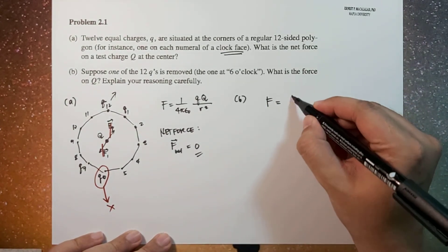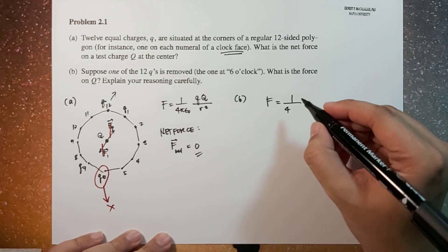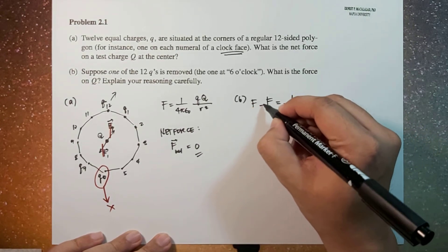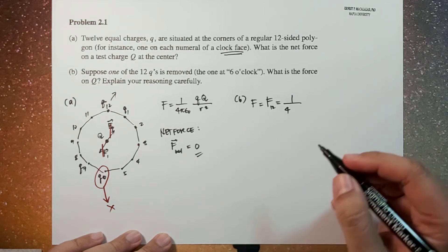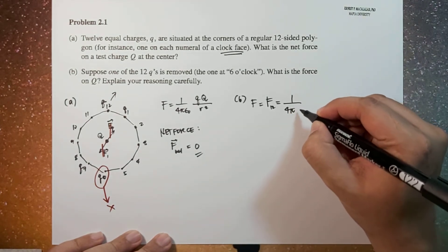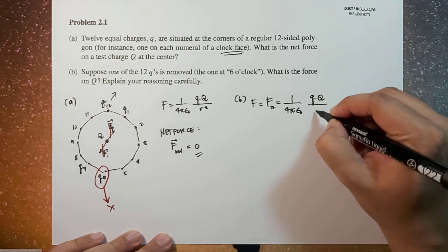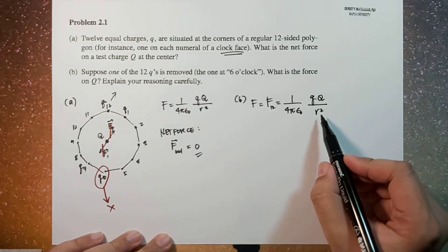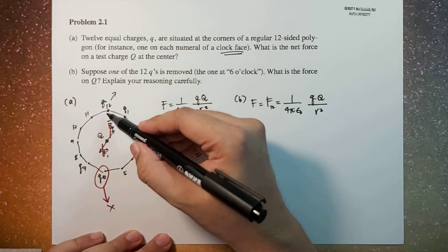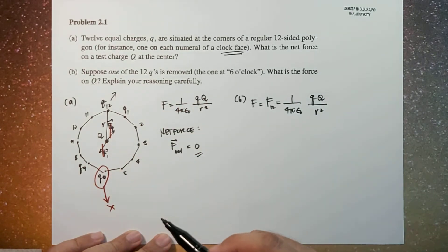So that means the net force on Q will be equivalent to the force exerted by q12, which is equal to 1 over 4π epsilon sub zero times q times Q over r squared, where r is the distance between the central charge capital Q and charge q12.